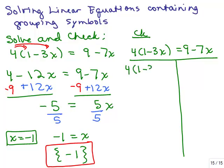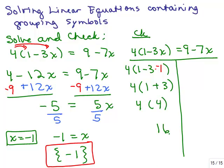So I have 1 minus 3 times negative 1. Let's do the left-hand side first. Inside the parentheses: 1 minus 3 times negative 1, that's plus 3. Still simplifying inside the parentheses, that's 4 times 4, or 16 on the left-hand side when you plug in negative 1.